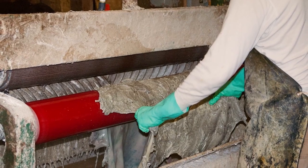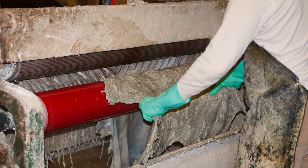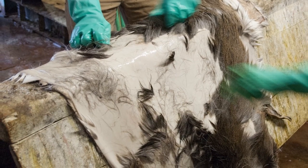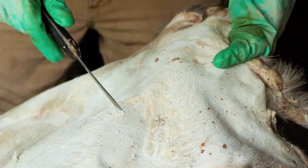Skins were soaked in lime water for three to ten days to loosen the animal's hair. The parchment maker then scraped away the hair and any remaining flesh.